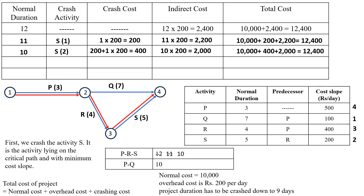After crashing the critical path P-R-S down to 10 days, the path P-Q also has a duration of 10 days, making it equal to the critical path. The P-Q path is now called a parallel path. In this condition, we must crash both the critical path and the parallel path simultaneously.